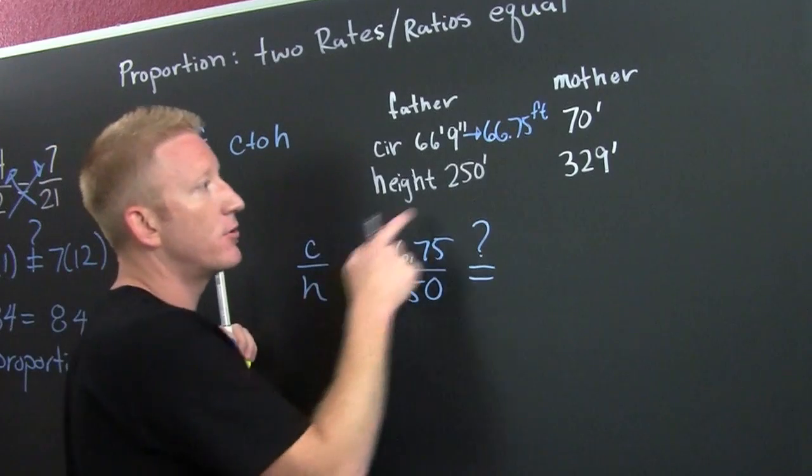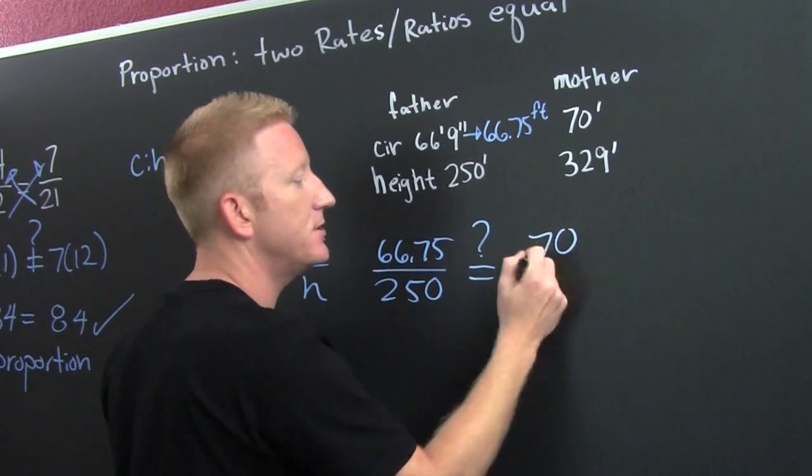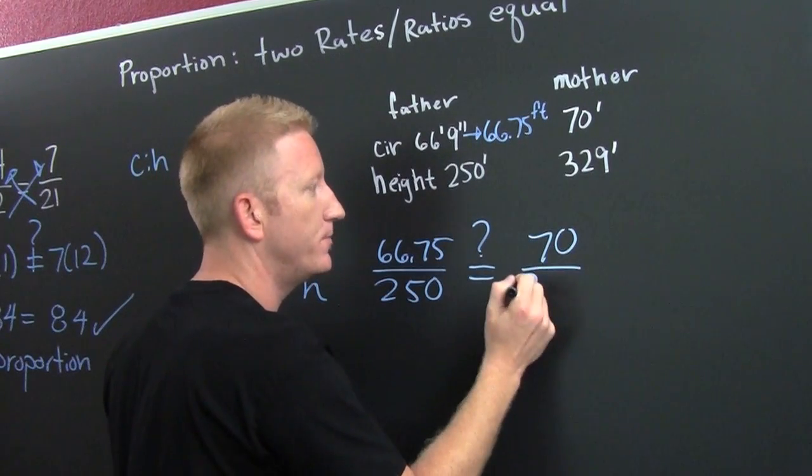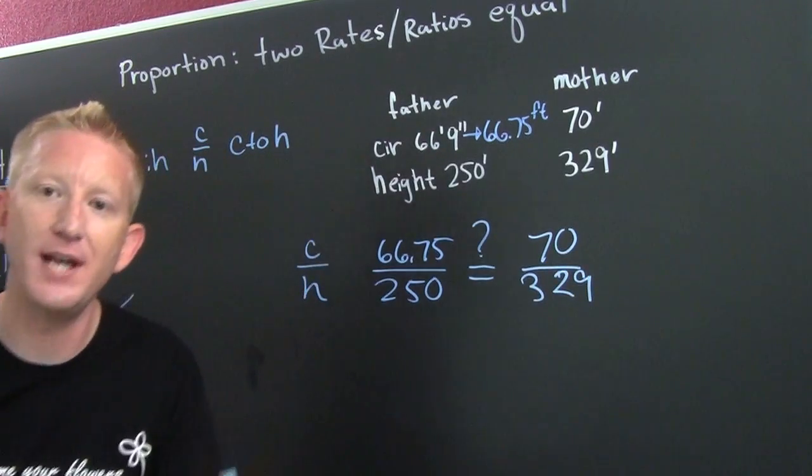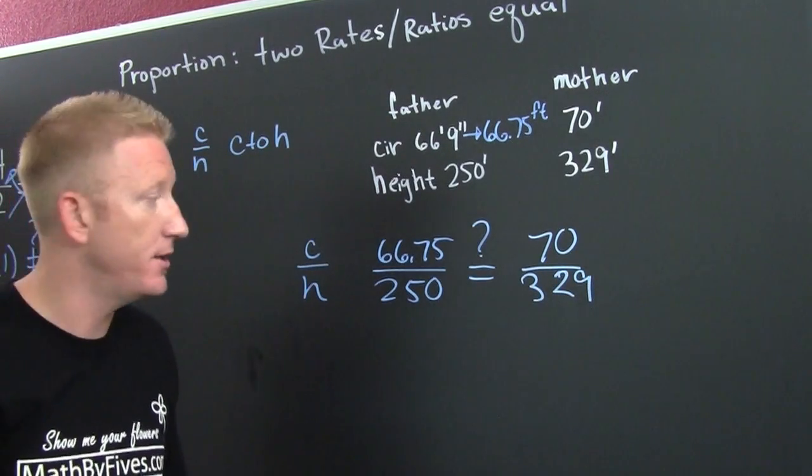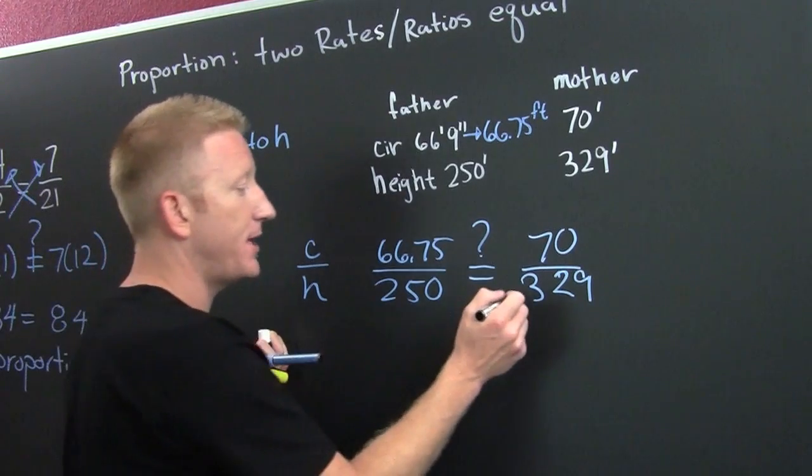And here we go. This ratio is 70... 329. And we want to find whether or not those are in proportion. So again, we're going to use that old trick. Cross multiplication. Whoosh.